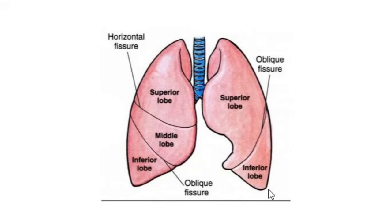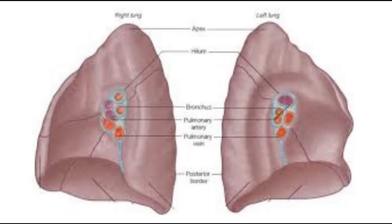Now I'll tell you about the impressions that different organs make on the lung — these little depressions you can see on the surface. It's important to know which organ makes each impression, because if that area of the lung is damaged, you should know which other organ could also be damaged. The impressions on the right and left lung are somewhat different but share some similarities.